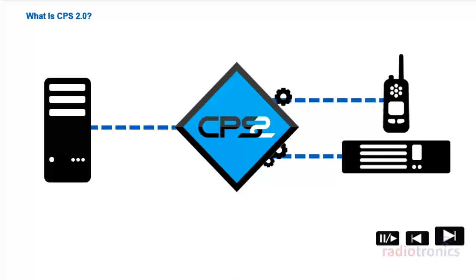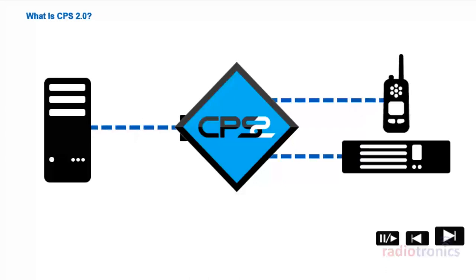A typical software package contains platform-specific software components, such as firmware, code plugs, language packs, and selling features. A license is required.